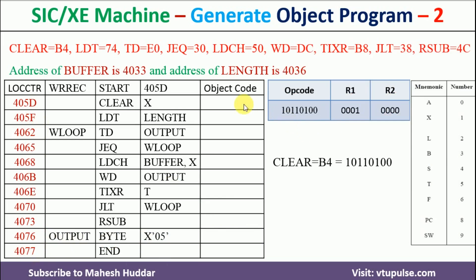Now we will calculate the object code. The first instruction is CLEARX, which is type 2. The type 2 instruction format has 8 bits for opcode, 4 bits for register 1, and 4 bits for register 2. The opcode for CLEAR is B4, so the first 8 bits are B4. Register 1 is X, whose value is 1, so we write 1. Register 2 is not present, so it is 0. That gives us B410.